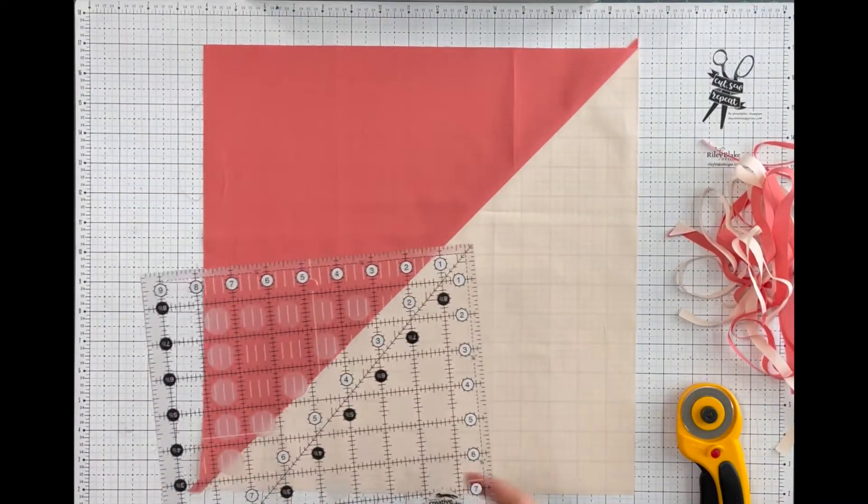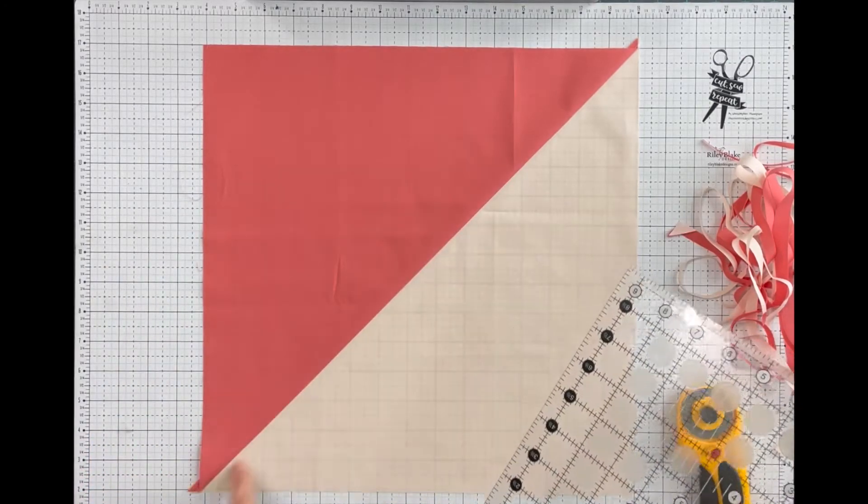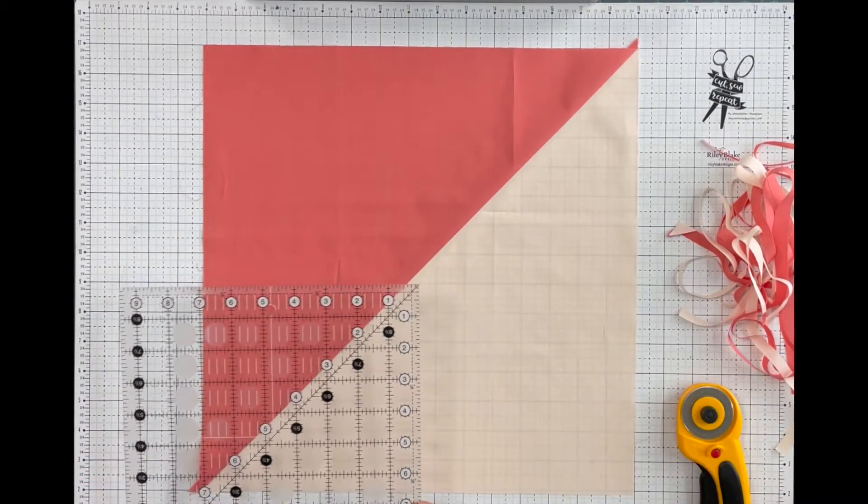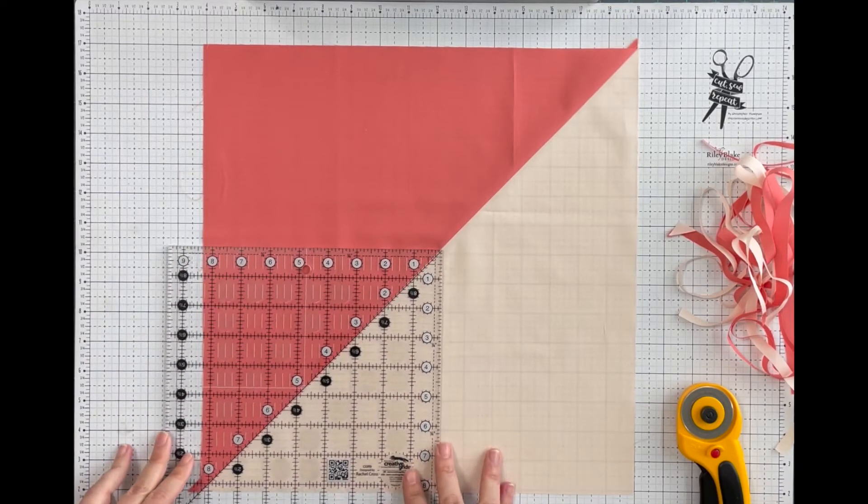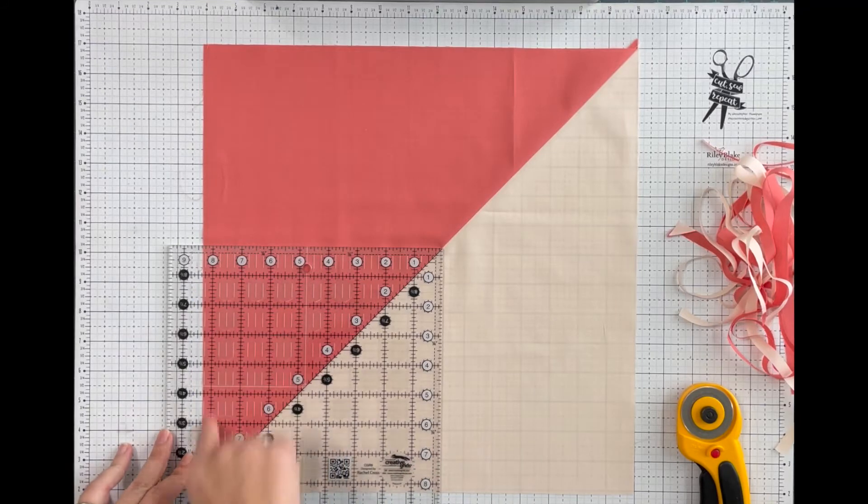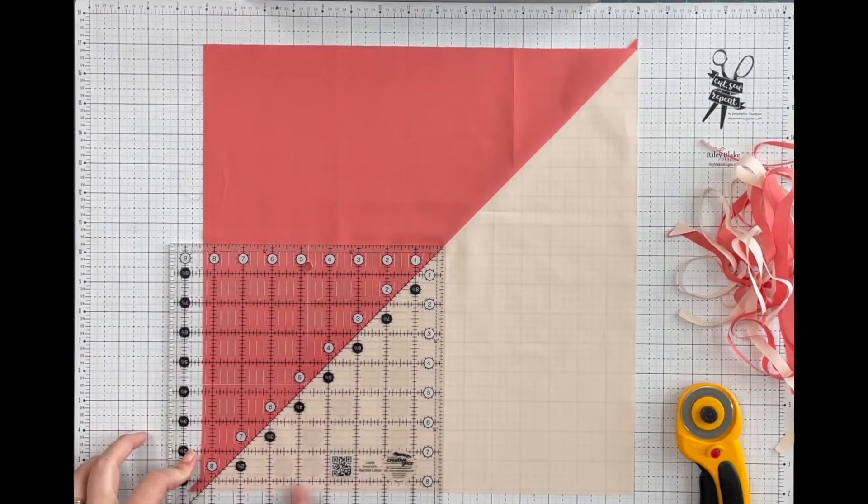What I'm going to do first is line up the diagonal on my square ruler with the diagonal of my half square triangle. 14 and a half minus 6 and a half is 8, so I want to make sure I have room after the 8 inch mark to trim these sides.